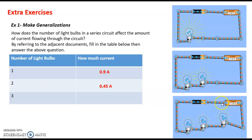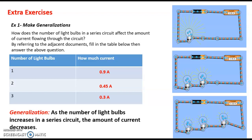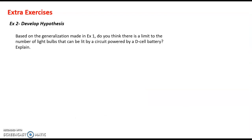When three light bulbs are connected in series to the same battery, the ammeter indicates a lower value of 0.3 ampere and we notice that the light bulbs are glowing even less brightly than in the first two cases. So how does the number of light bulbs in a series circuit affect the amount of current? We can make a generalization: as the number of light bulbs increases in a series circuit, the amount of current decreases.